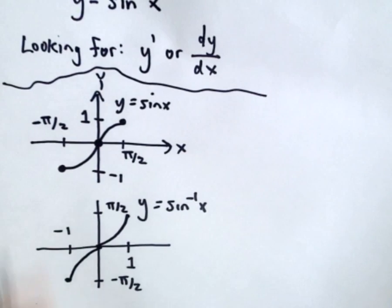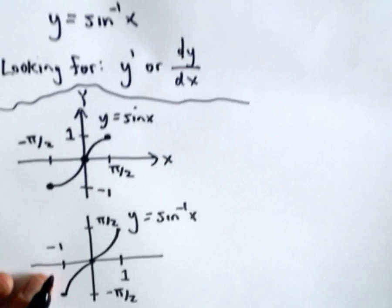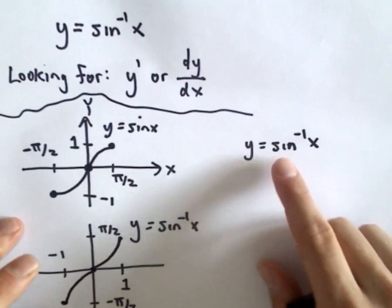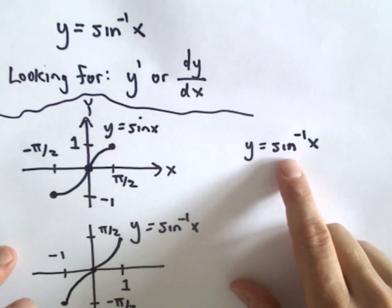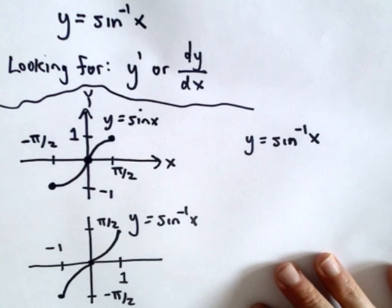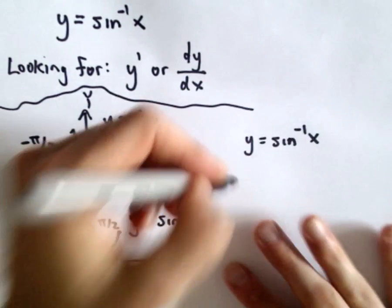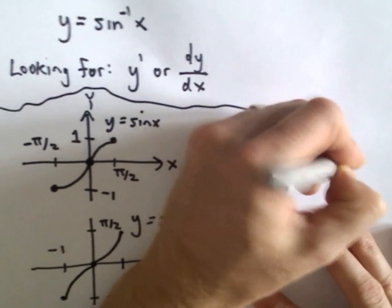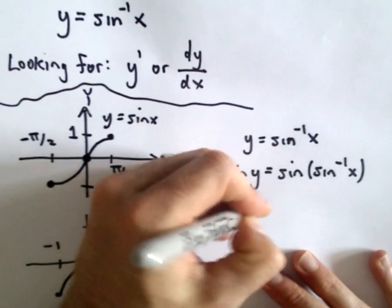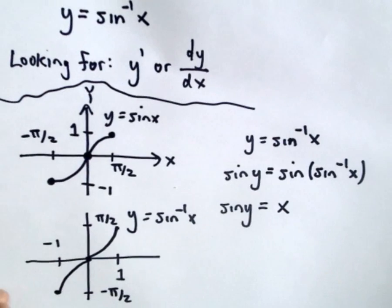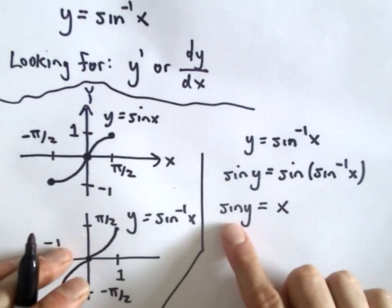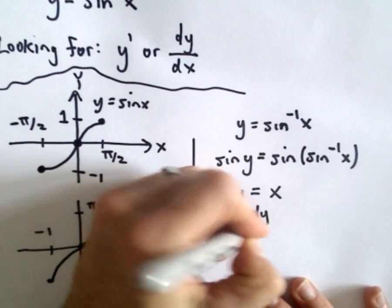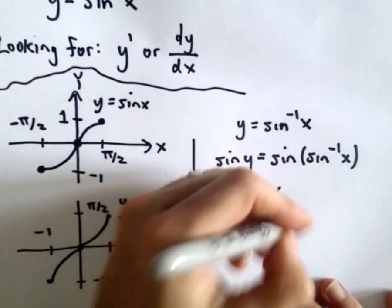We'll come back to this graph in a second. We're going to use an identity and implicit differentiation to find the derivative. Assuming that inverse sine of x is differentiable — and it is, because sine of x is differentiable — the first thing we can do is apply sine to both sides. So I have sine of y on the left, and sine of inverse sine on the right. Those functions cancel each other out, and we're just left with sine of y equals x. Now we use implicit differentiation: the derivative of sine is cosine, so the derivative of sine y is cosine y times dy over dx, and the derivative of x is just one.